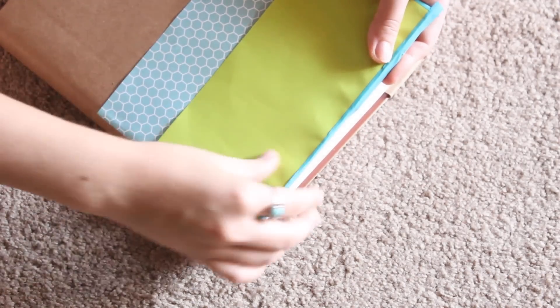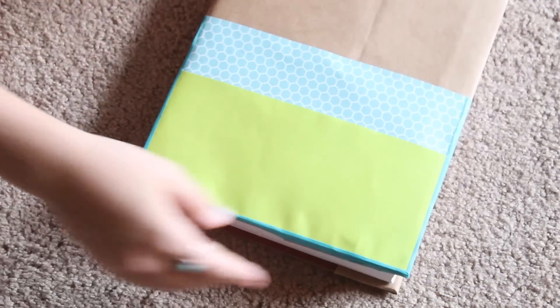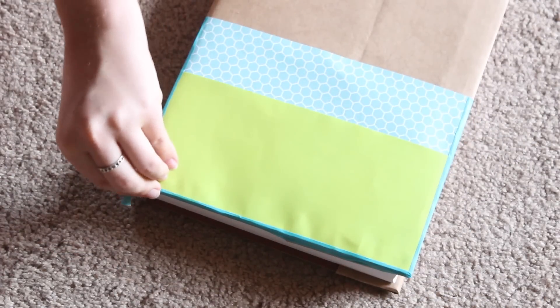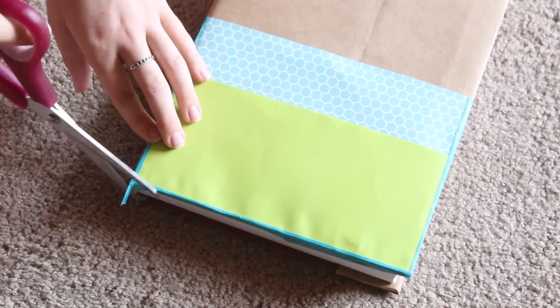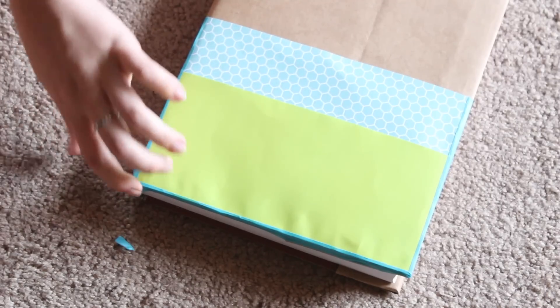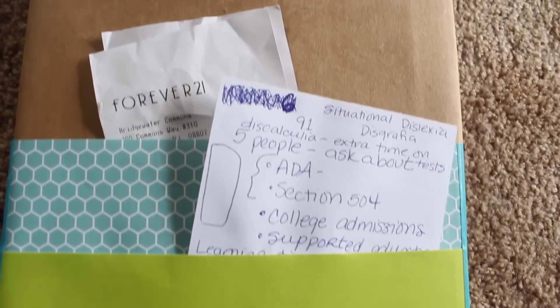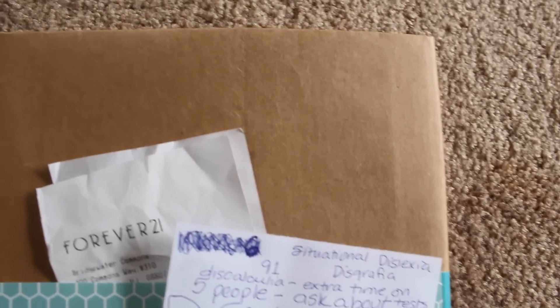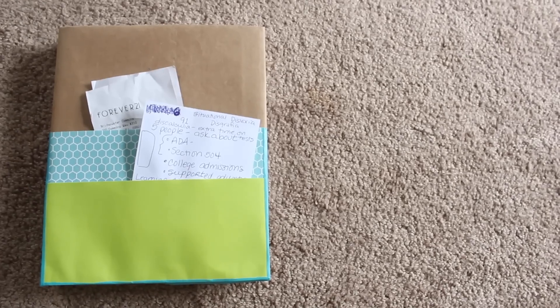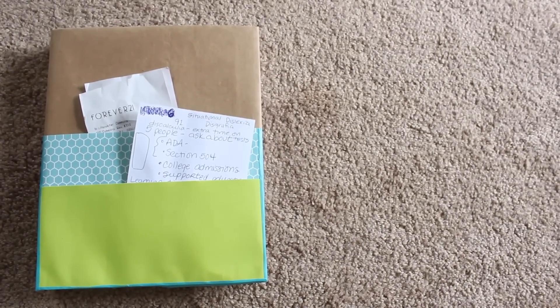So this is totally optional, but if you want, you can go ahead and add some washi tape. And once you are finished with that, you are finished with the book cover. I think this one is so cute and super convenient. You can keep so many things inside those pockets, and I think this one would be great for classes.